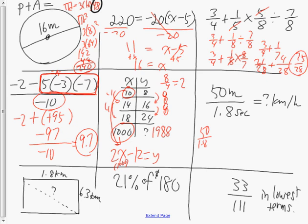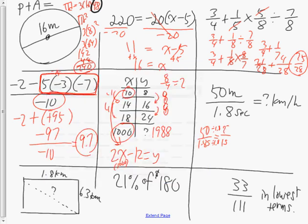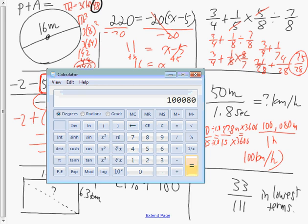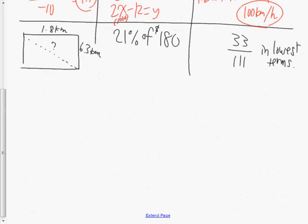For the rate conversion: 50 meters in 1.8 seconds. First I find the unit rate by dividing both by 1.8, giving approximately 27.8 meters per second. There are 3600 seconds in an hour, so multiplying 27.8 by 3600 gives 100,080 meters per hour. Since there are 1000 meters in a kilometer, that's approximately 100.08 kilometers per hour.